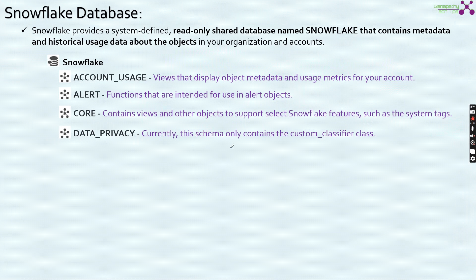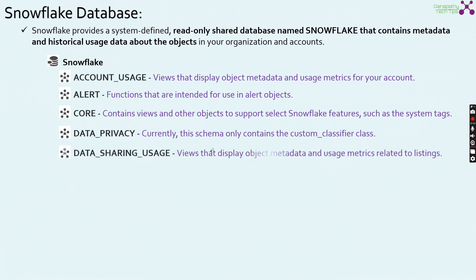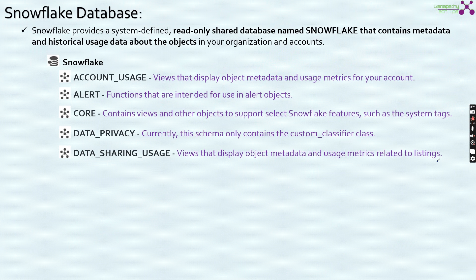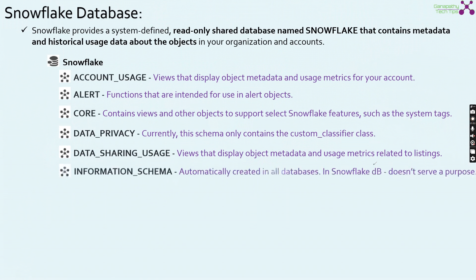Fourth is data privacy. Currently, this schema contains the custom classification class. Then there is data sharing usage, which contains the views that display the object metadata and usage metrics related to listings. Listings relate to the Snowflake data marketplace — the place where we can do data consumption and also provide data. We saw this to a greater extent in our previous videos as well.